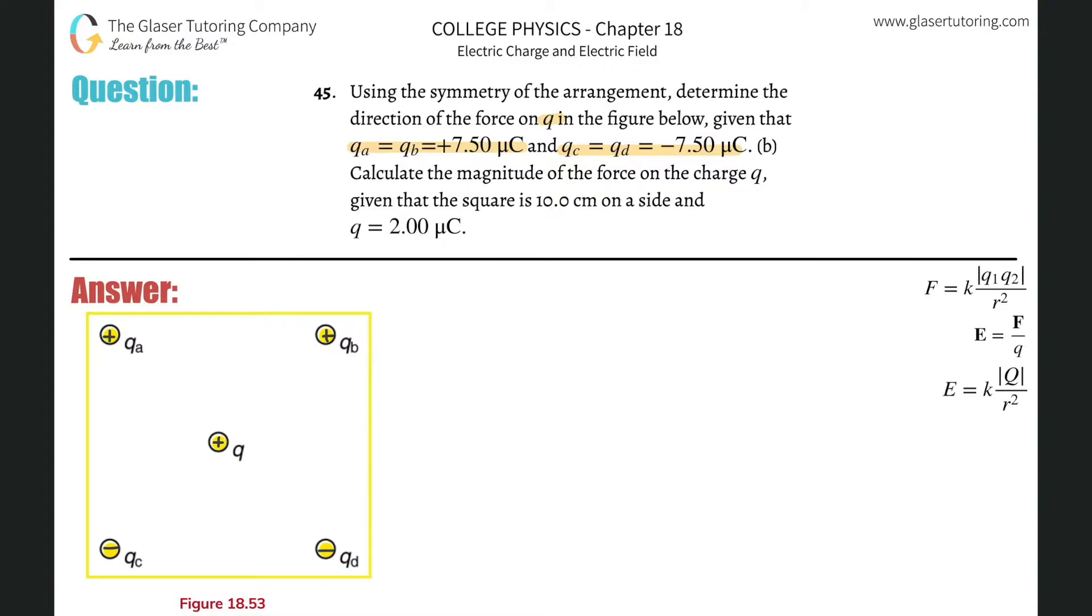So the force on Q, because that's the charge we're interested in calculating the force on, it's going to be a vector pointing this way. I'll call this the force of A on Q. How about then this guy? Same thing. It's repulsive, both positive, so they're going to repel. So this is going to be pointing this way. I'll call that FB.